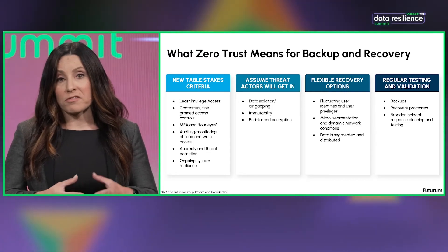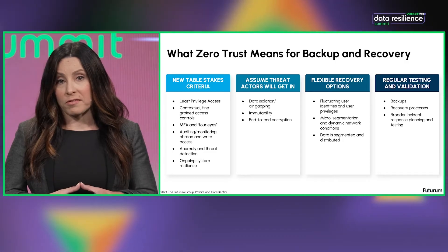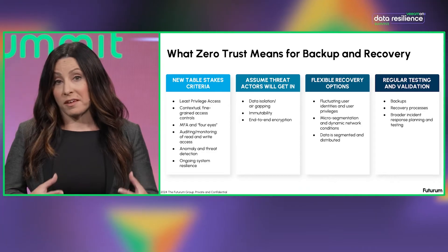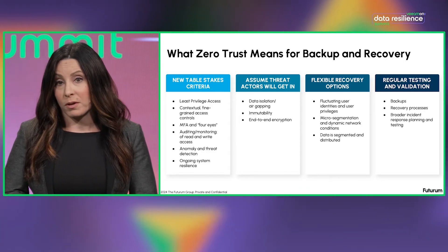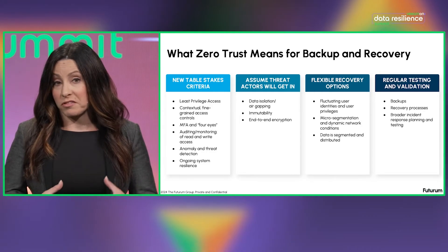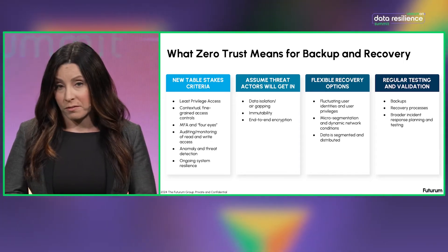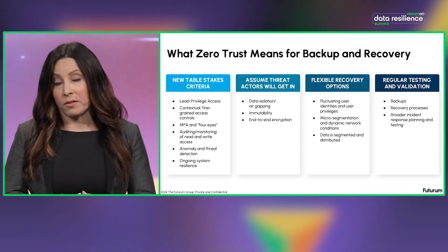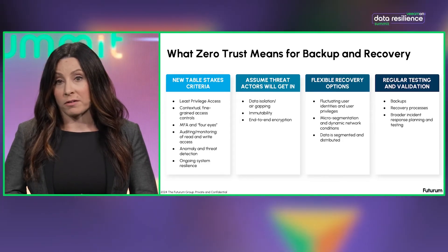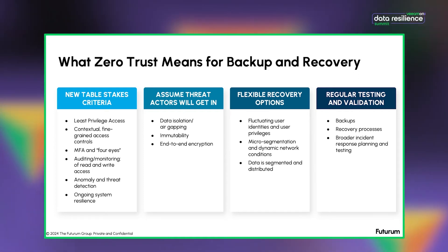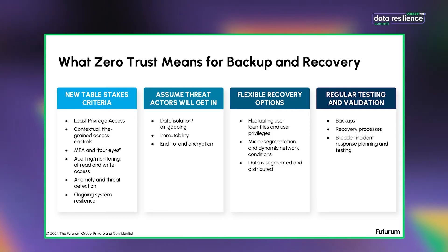There are another couple of capabilities that become table stakes. One is the ability to have segmentation within the backup and recovery environment, including data isolation or air-gapping practices — sometimes referred to as data vaulting. This prevents lateral movement within the environment in the event that an attacker gets in. Best practices around immutability and encryption also become non-negotiable, because these inhibit the ability to tamper with data if an attacker penetrates the environment.